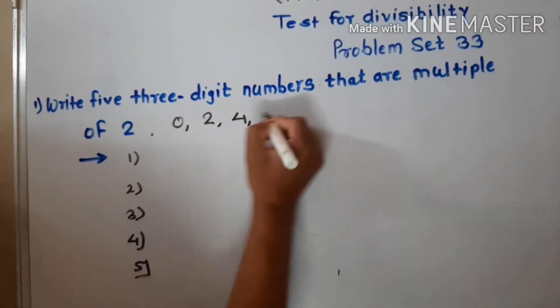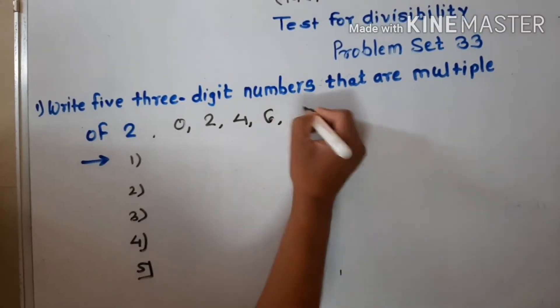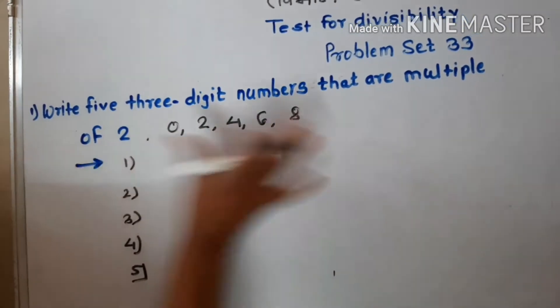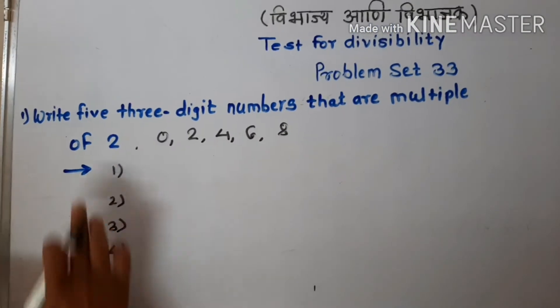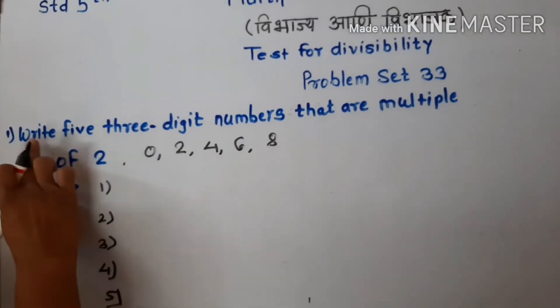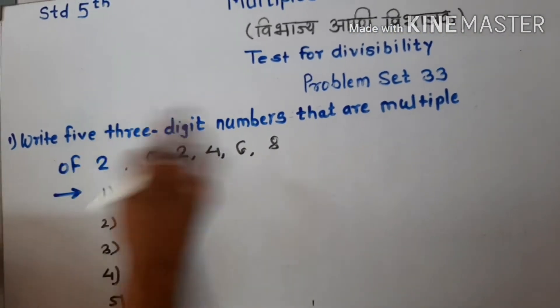2, 4, 6, 8 — Q8. See this first number. Write 5 three-digit numbers that are multiples of 2.